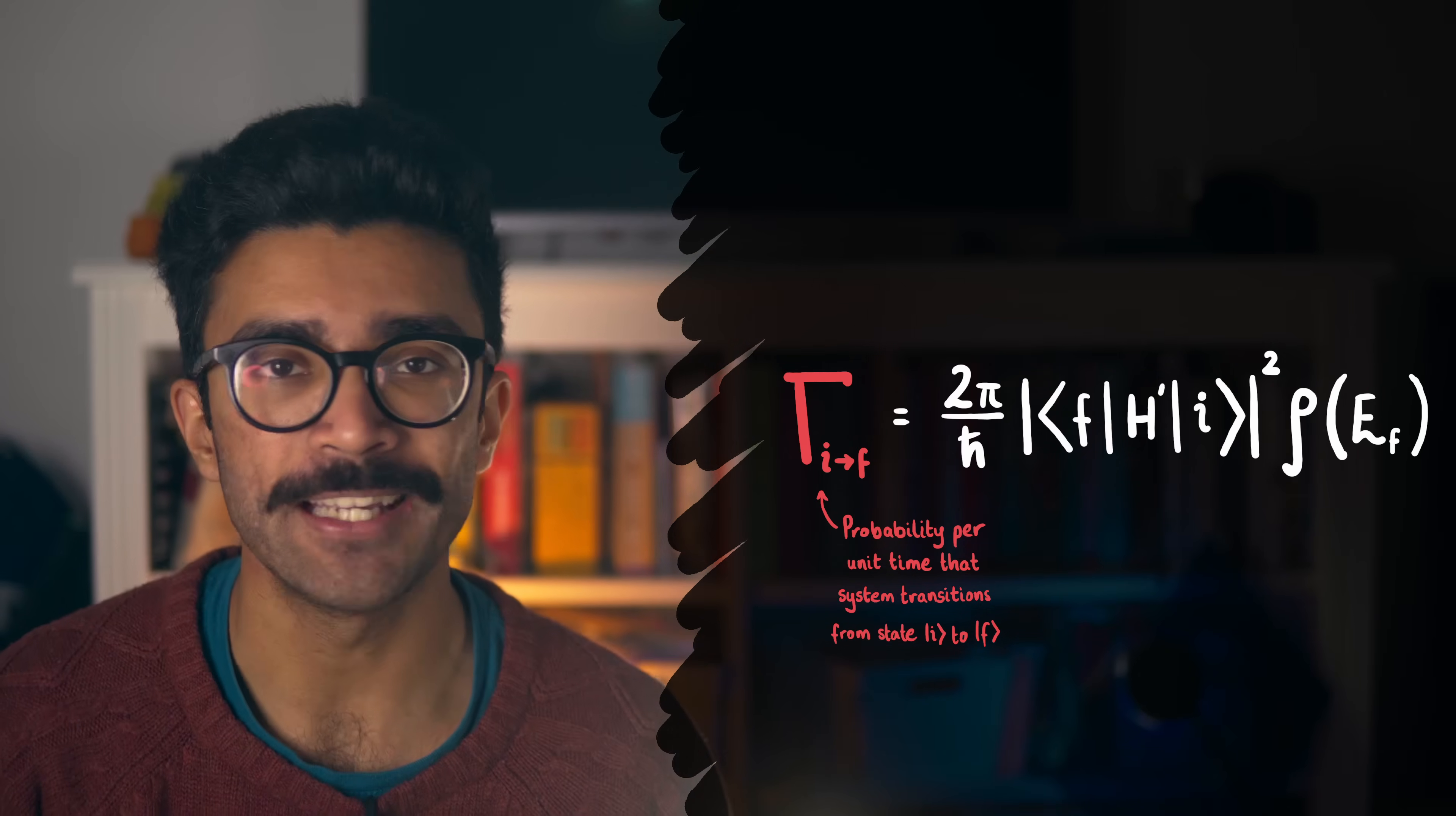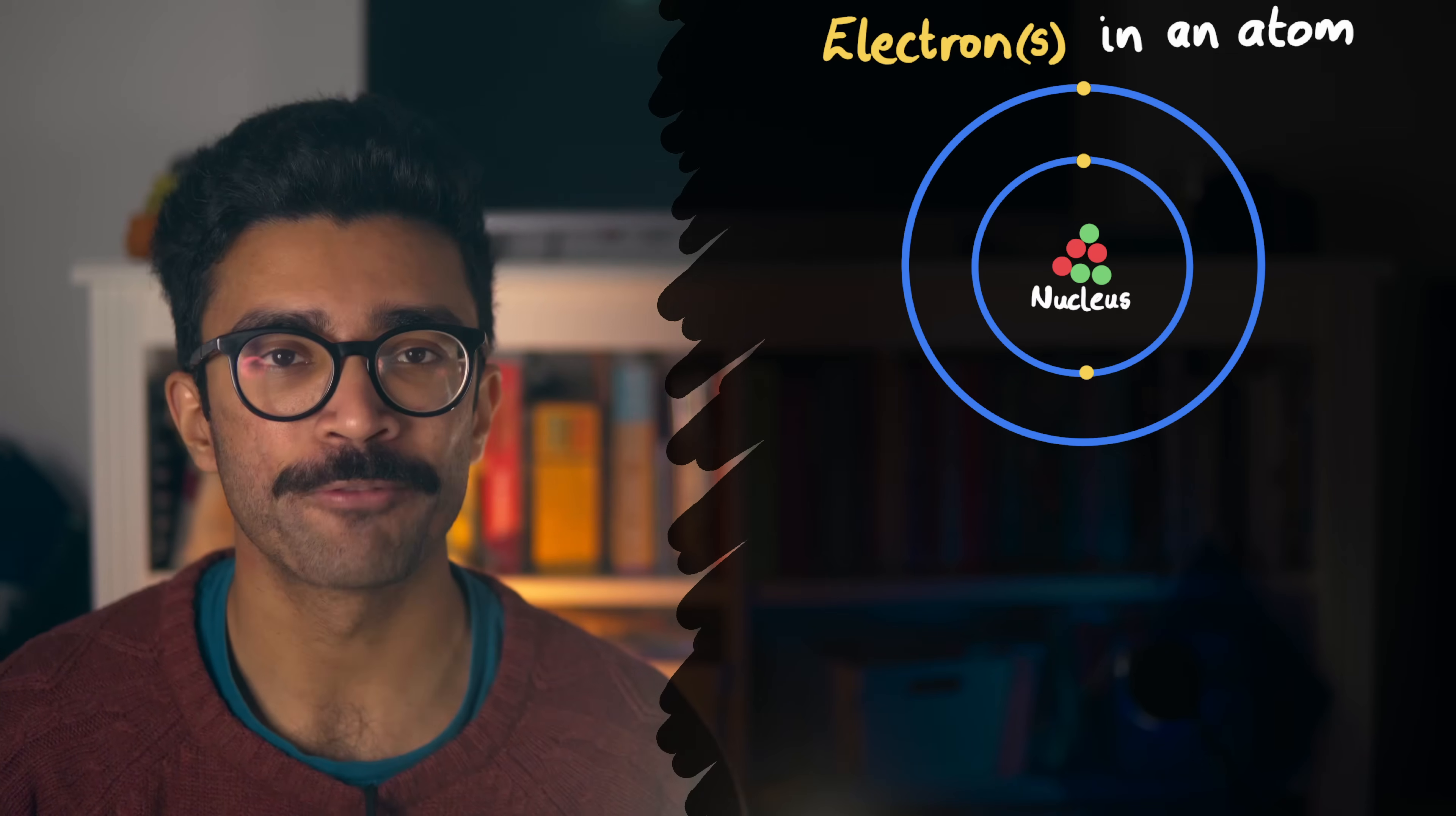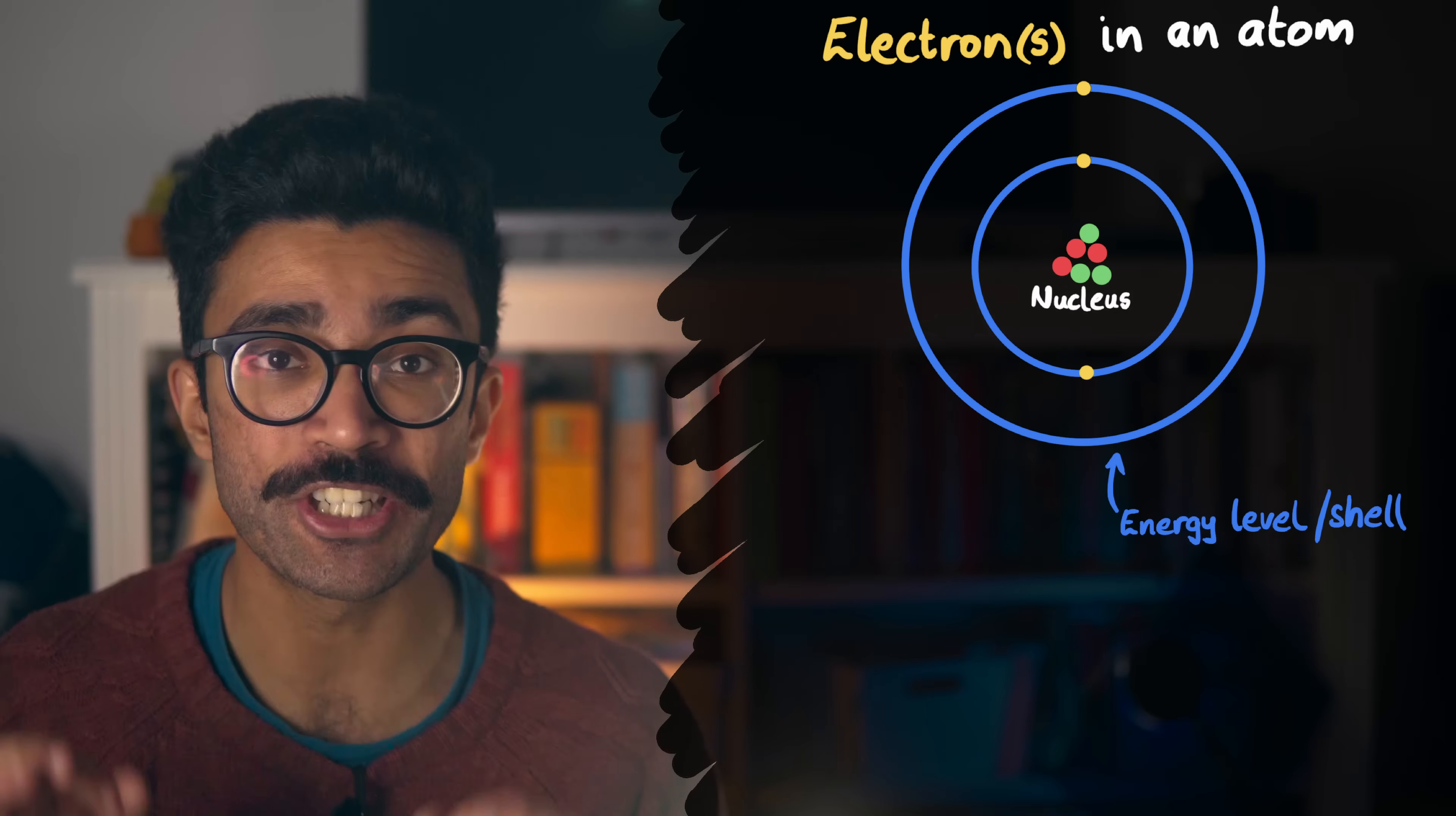So, what exactly does this all mean? Well, let's think about a system that we can study using quantum mechanics. One that we might be familiar with is electrons within an atom. We know that atoms are formed of protons and neutrons at the center within a nucleus, and electrons being found around the nucleus. Importantly, these electrons are found in very specific energy levels, also known as electron shells.